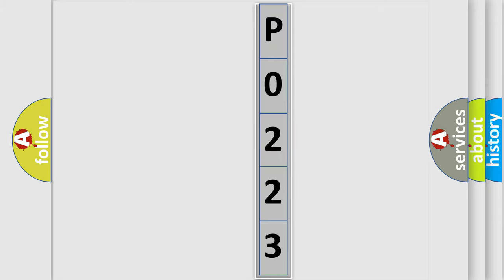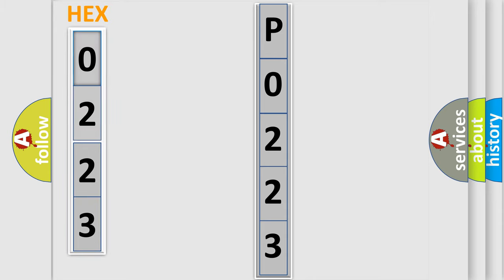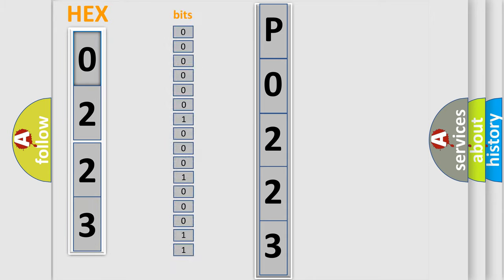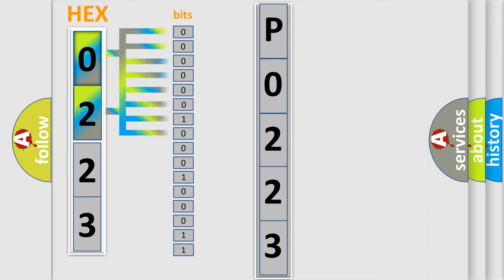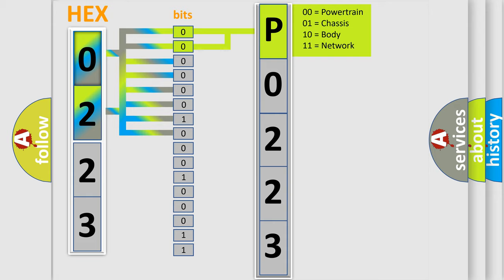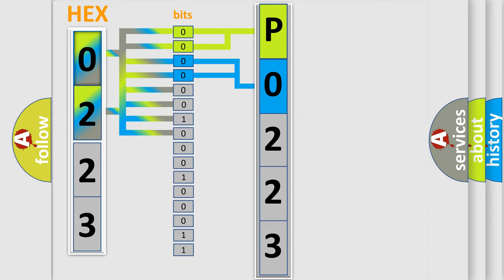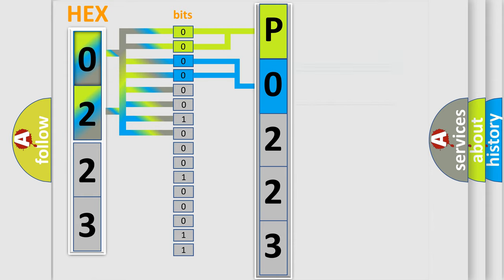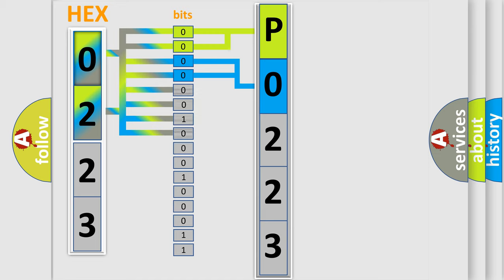The error code is split into two bytes consisting of 16 bits. One bit is the basic unit that each computer works with. The bit has two logical states: 0, low level, and 1, high level. By combining the first two bits, the basic character of the error code is expressed. The next two bits determine the second character. The last bits of the first byte define the third character of the code.